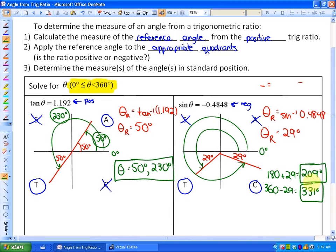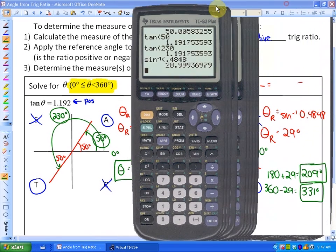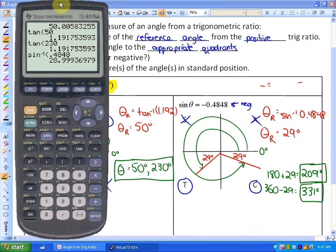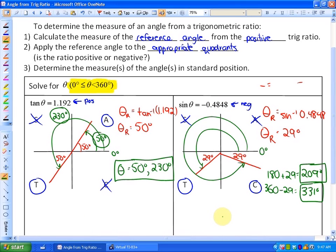Let's go ahead and just check those. What I can do is just take the sin of both of those angles. So let's take sin of 209. In that case, we do get roughly negative 0.4848. And let's also take the sin of 331. That's exactly the same, negative 0.4848. So those are our solutions to those trig ratios.